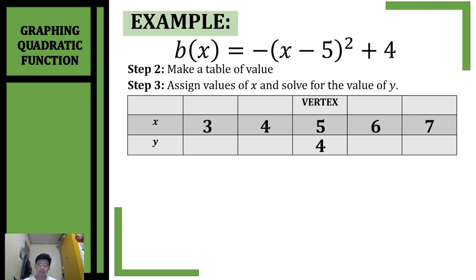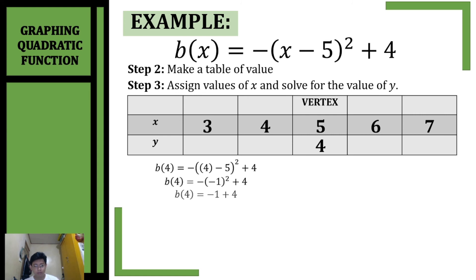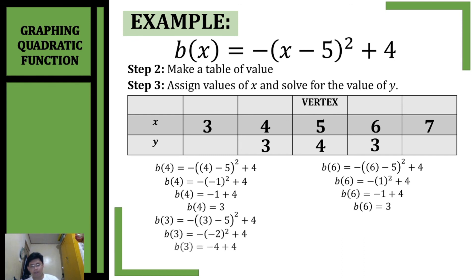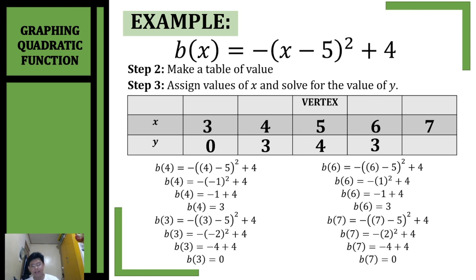Let's solve for the value of y. Substituting 4 into our original function, simplifying and combining like terms, y is equal to 3. Substituting 6, combining like terms and simplifying, y is also 3. Substituting 3, simplifying and combining like terms, y is equal to 0. Substituting 7, simplifying and combining like terms, y is also 0.